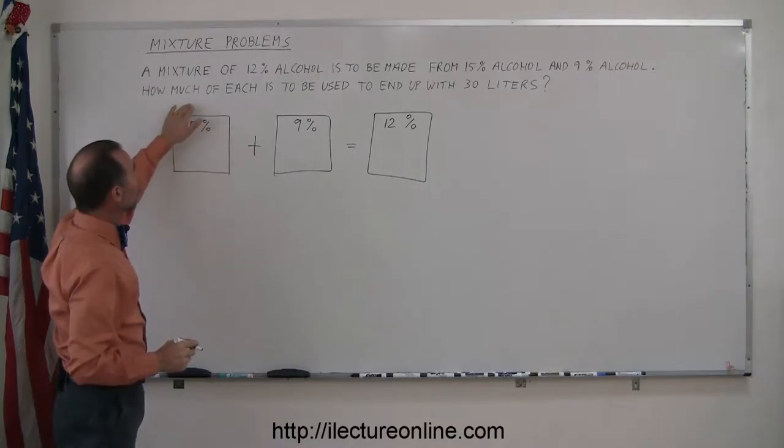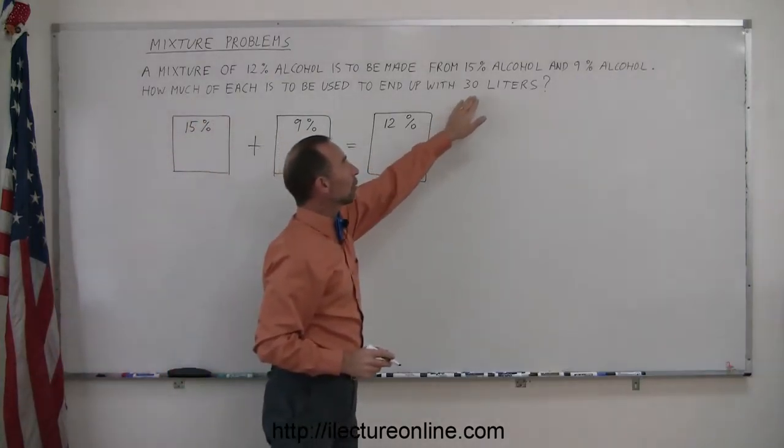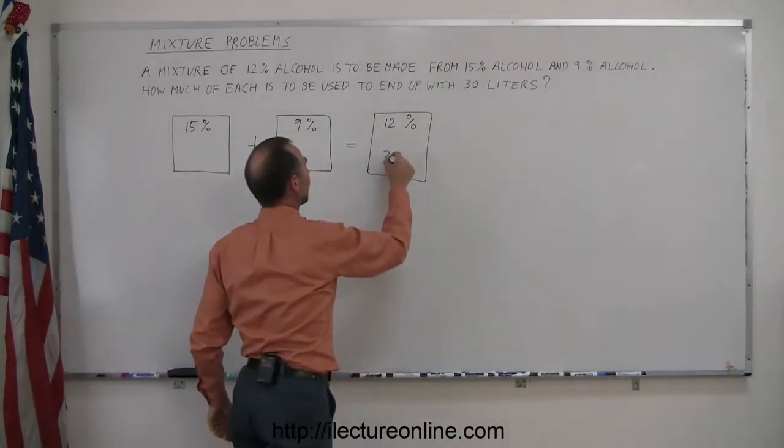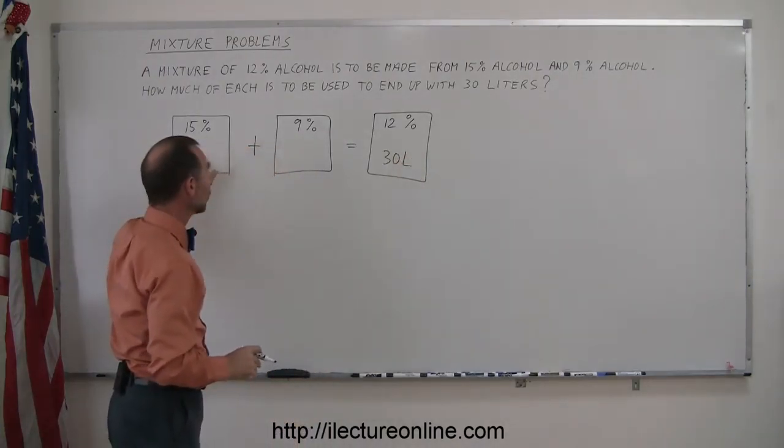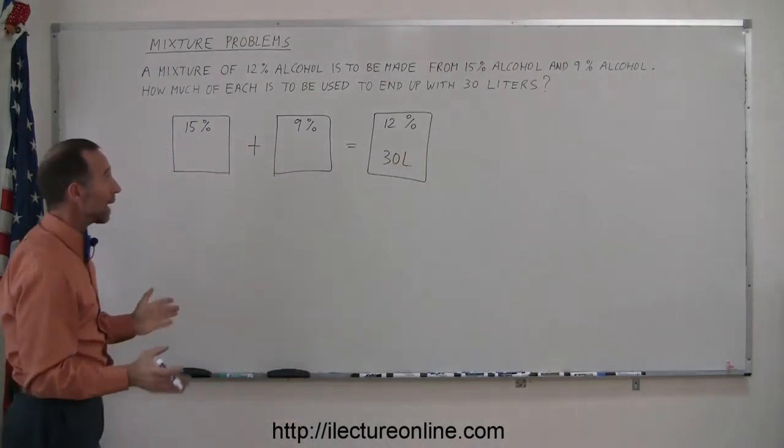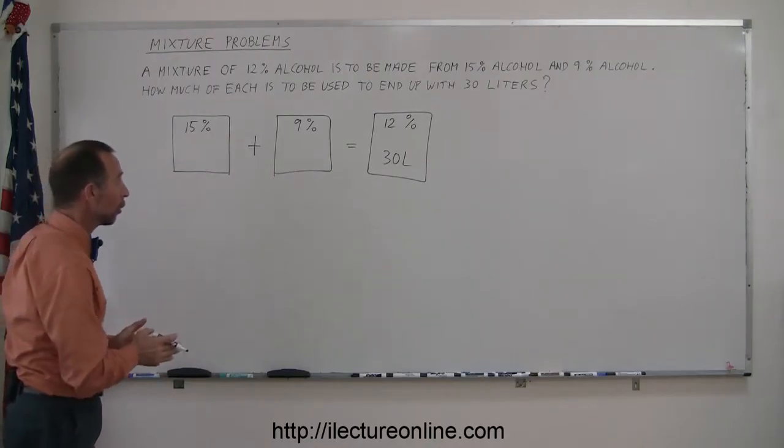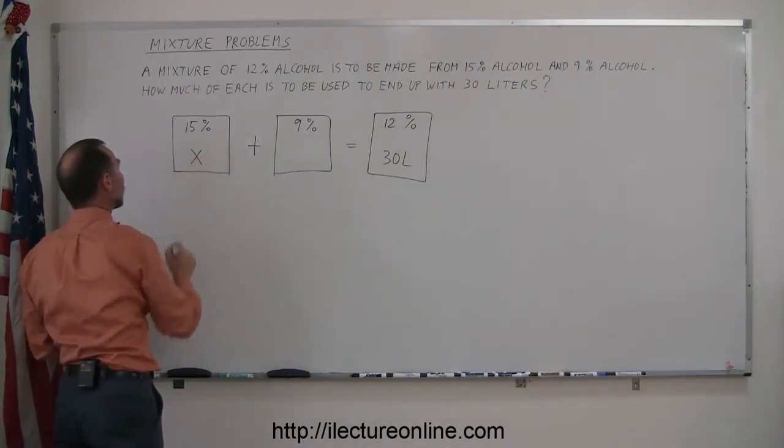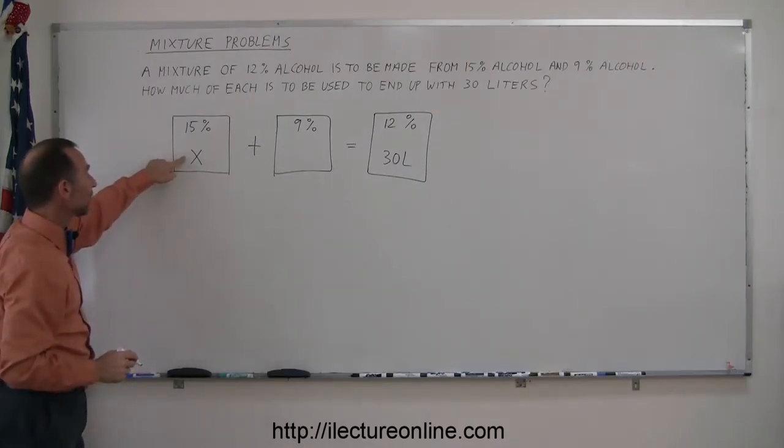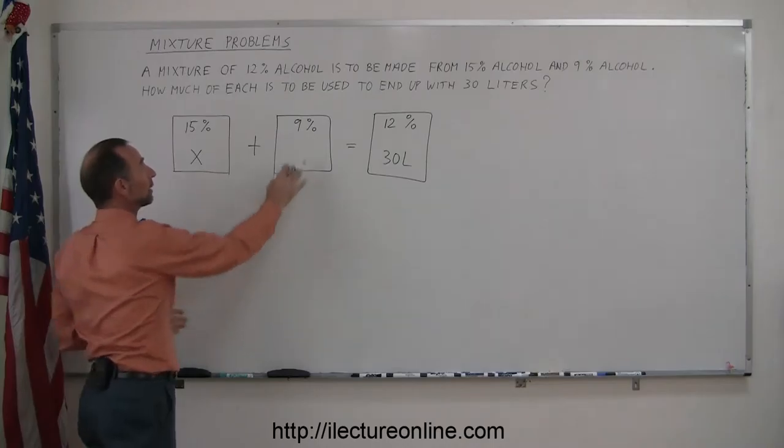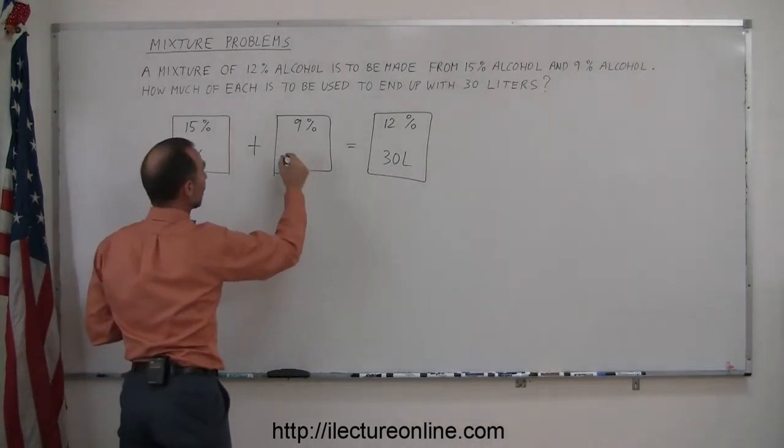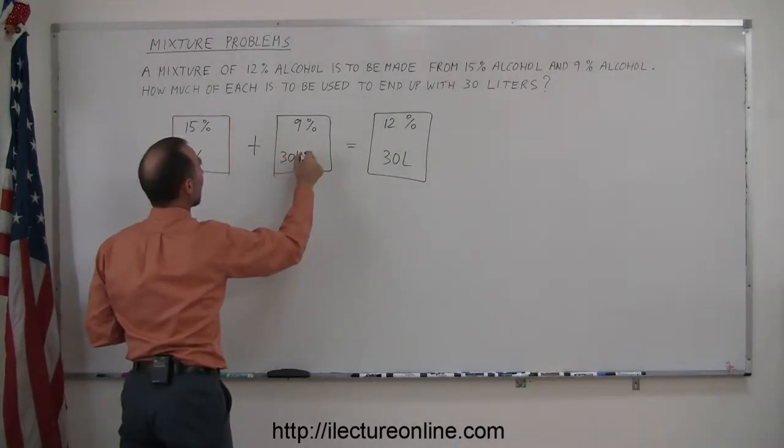We already know that you're going to end up with 30 liters of 12% alcohol, but you don't know how much you need for each of these. But you do know that they both add up to 30 liters. So if this can be represented by x, meaning you'll use x liters of 15% solution, then you know the remainder must be made up by the 9% solution. The remainder can be written as 30 liters minus x.